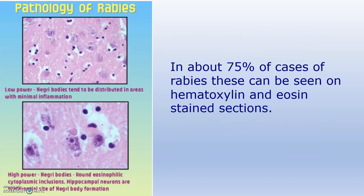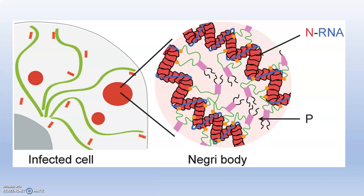In the pathology of rabies, you can see the Negri bodies — those are round, eosinophilic, cytoplasmic inclusions. In about 75% of cases of rabies, these can be seen on hematoxylin and eosin stained sections, because they will properly take the eosin stain. That is why they are eosinophilic. These are Negri bodies.